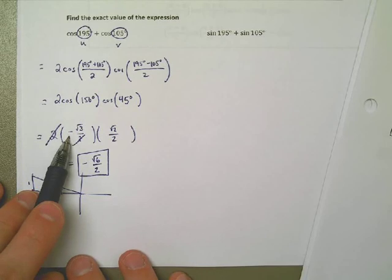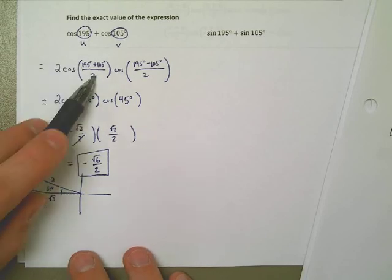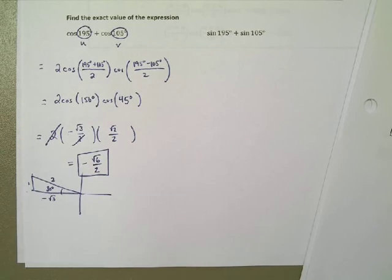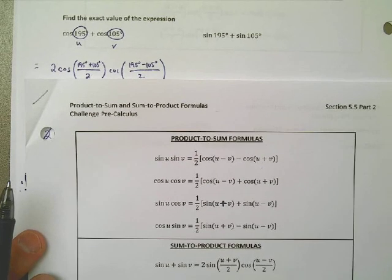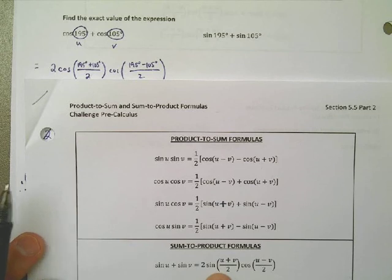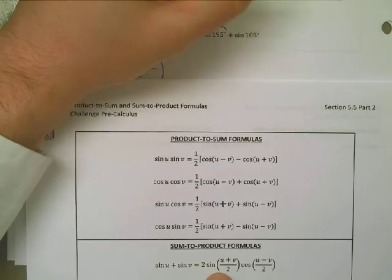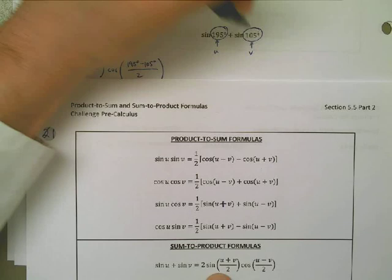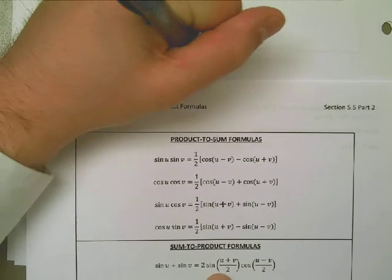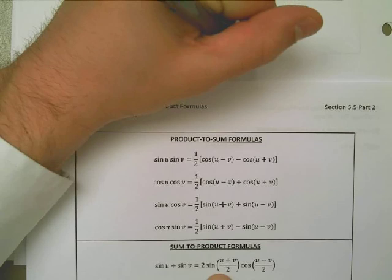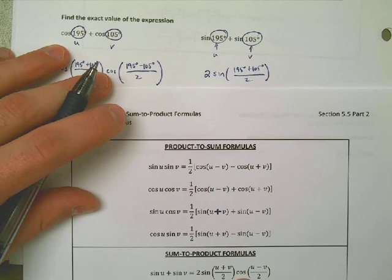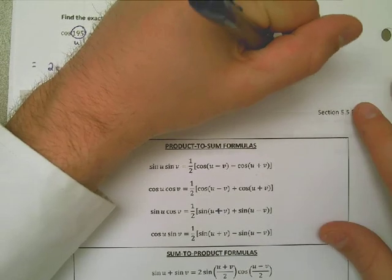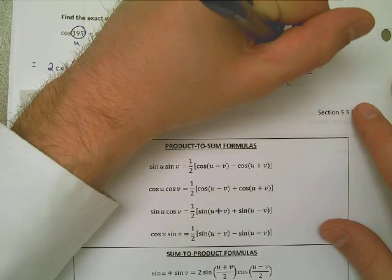And so it turns out I'm going to use the very bottom formula on the screen right now. U is going to be 195 and v is going to be 105, and that means I need to do this. I have 2 times the sine of 195 plus 105 all over 2 times the cosine of u minus v all over 2. I wrote u and v, I meant 195 and 105 all over 2. It's 195 and 105.